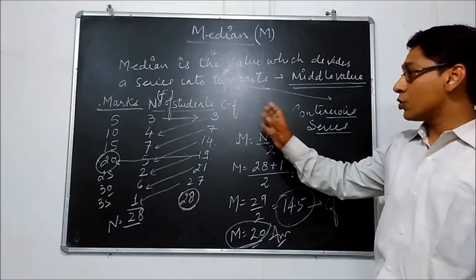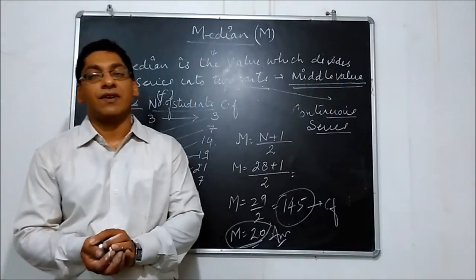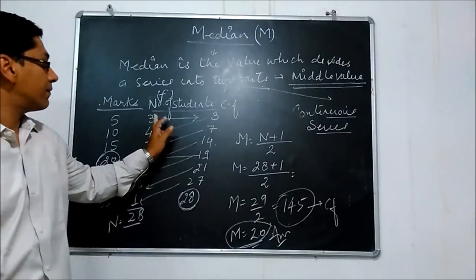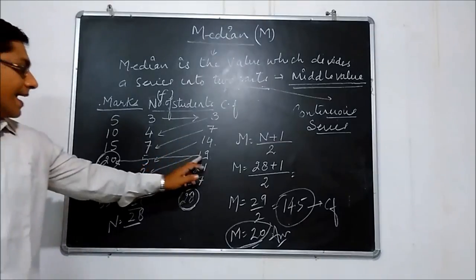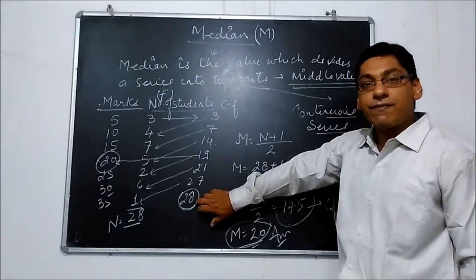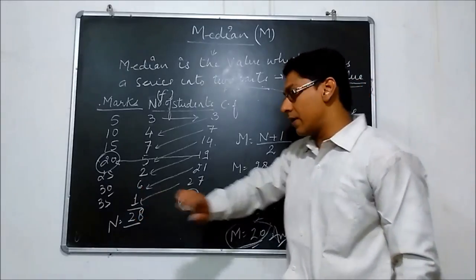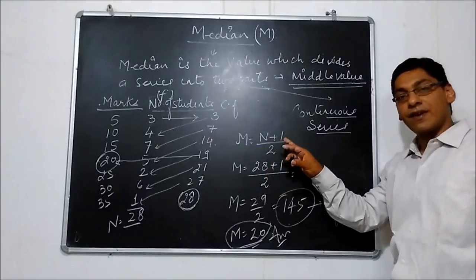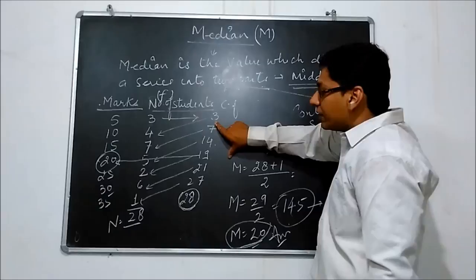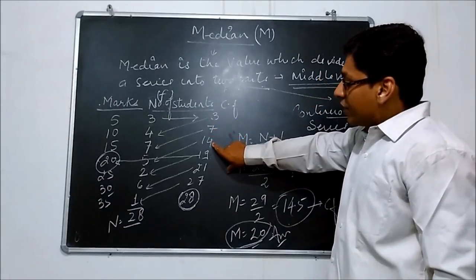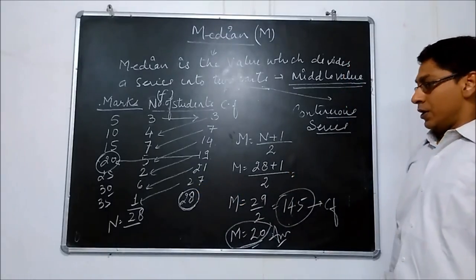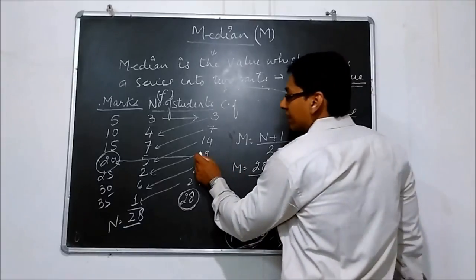For the calculation of median in discrete series: first arrange the given data in ascending order, then calculate CF, and then use formula M = (N+1)/2. Then see the resulting value in cumulative frequency. 14.5 falls here: 0–3, 4–7, 8–14 here, 15 is here, 20–21 here, 27 here, then 28. 14.5 is located at 19, so this is the median.